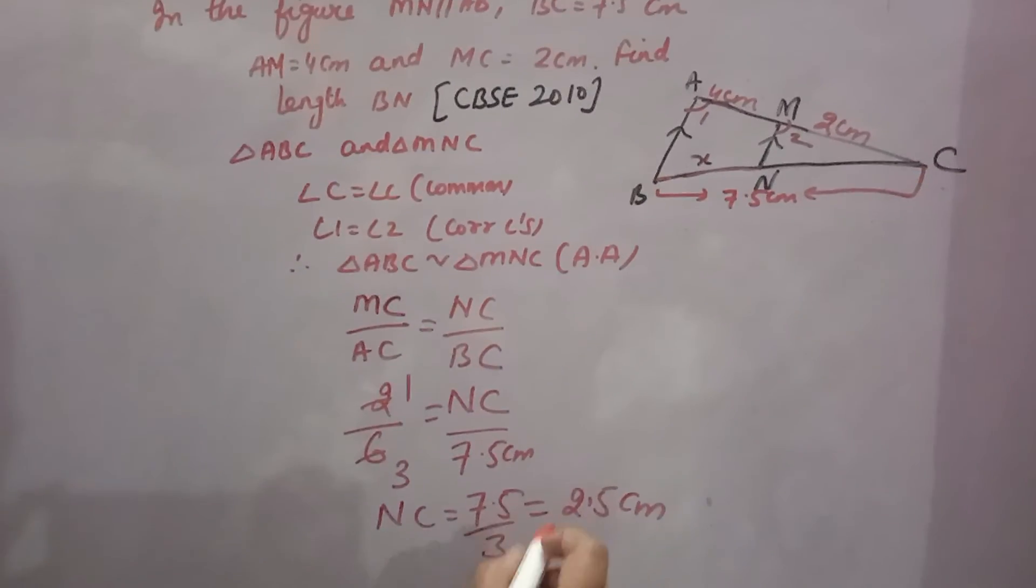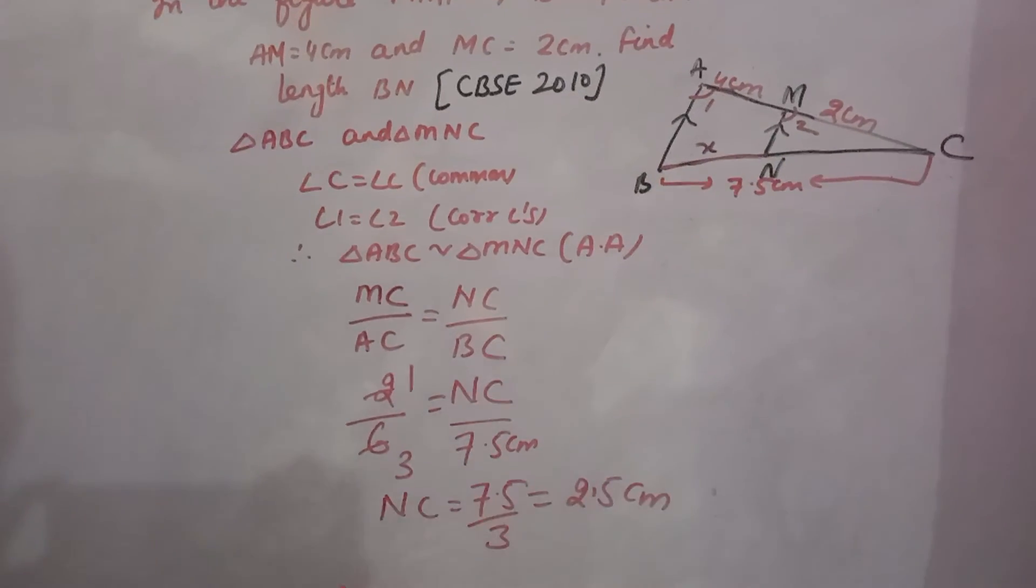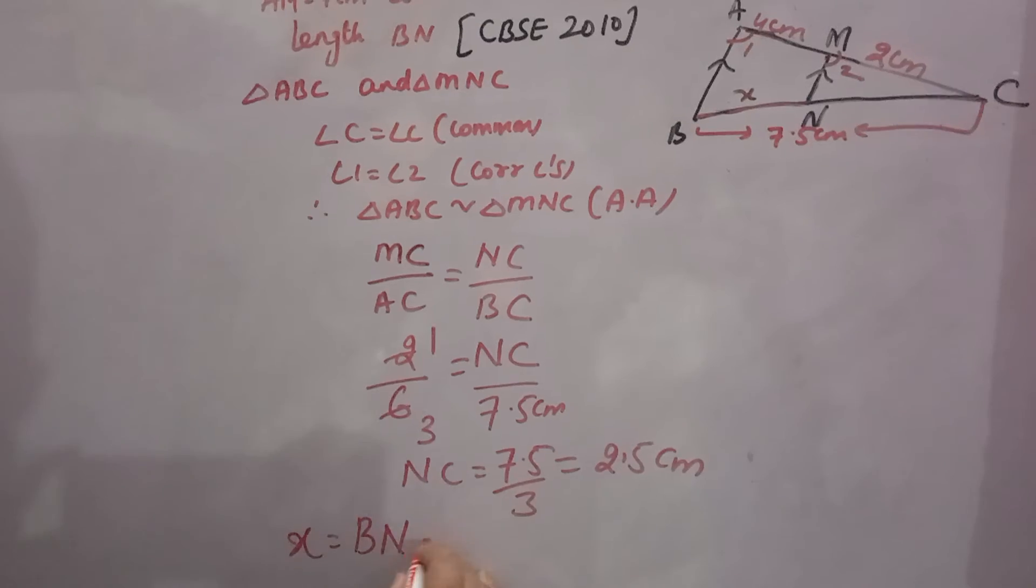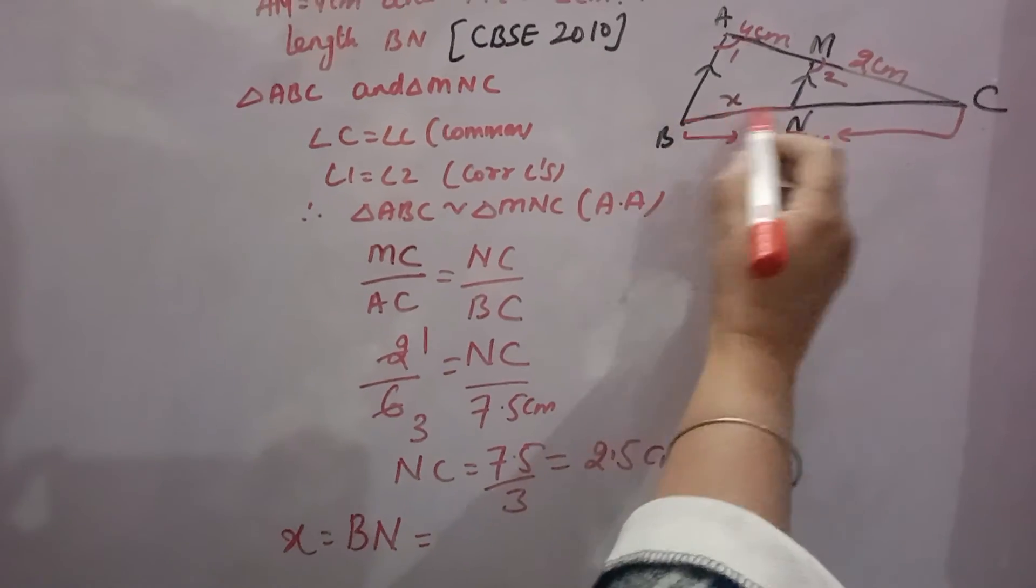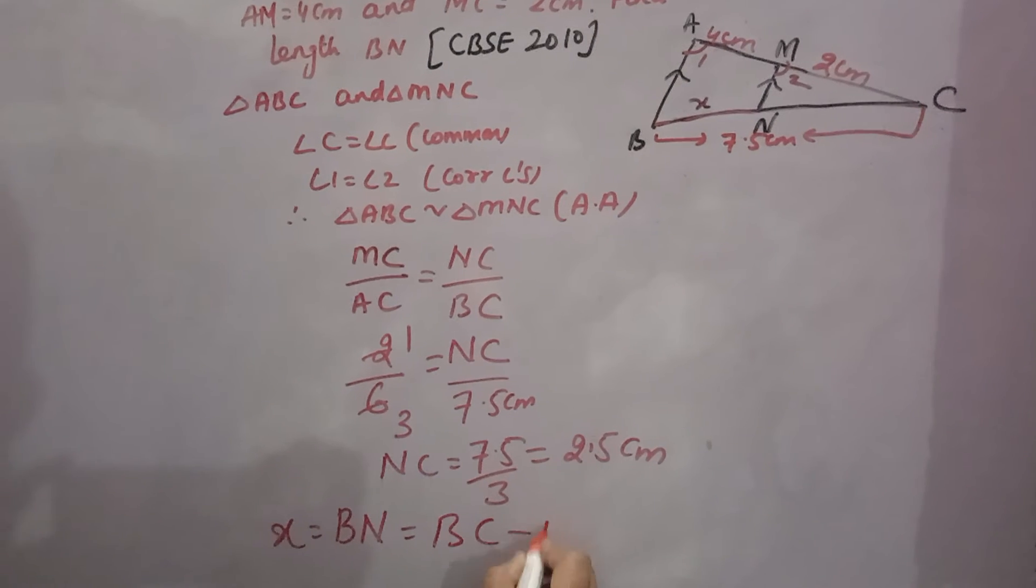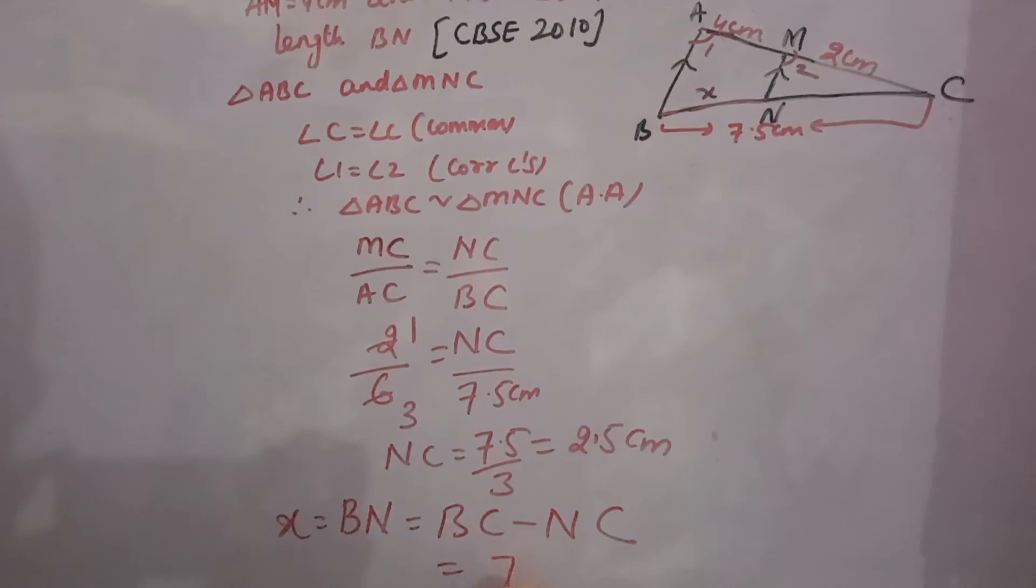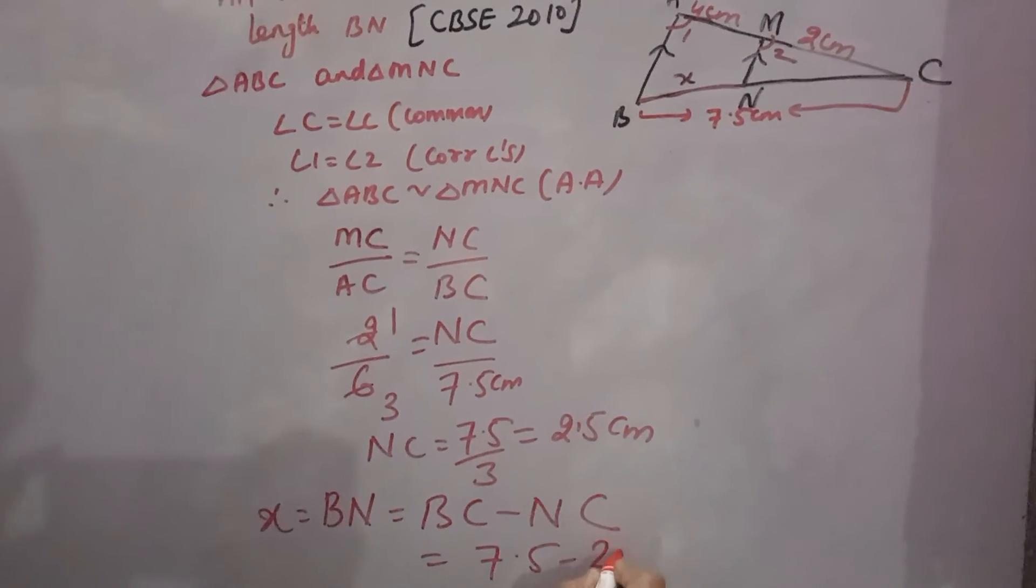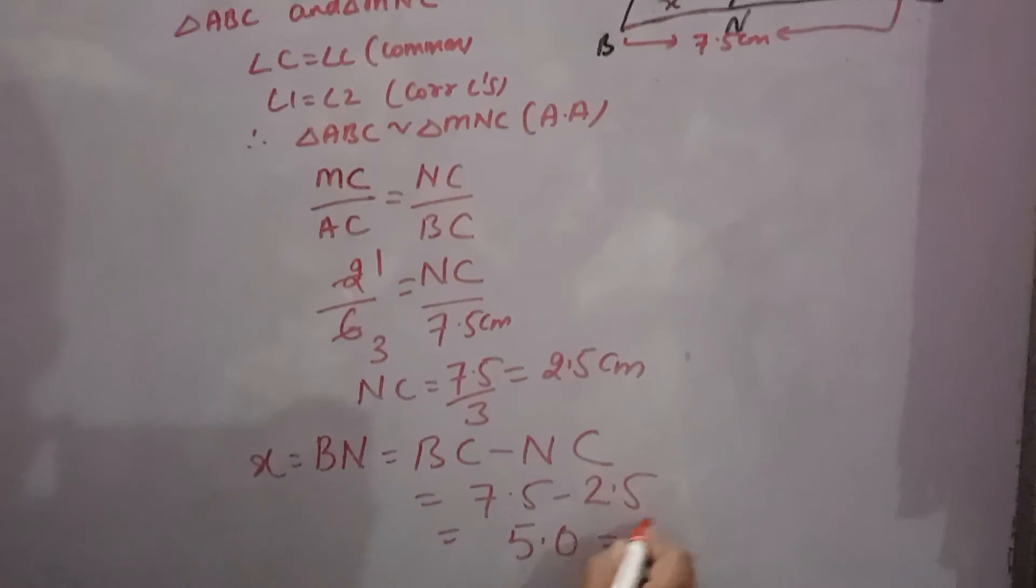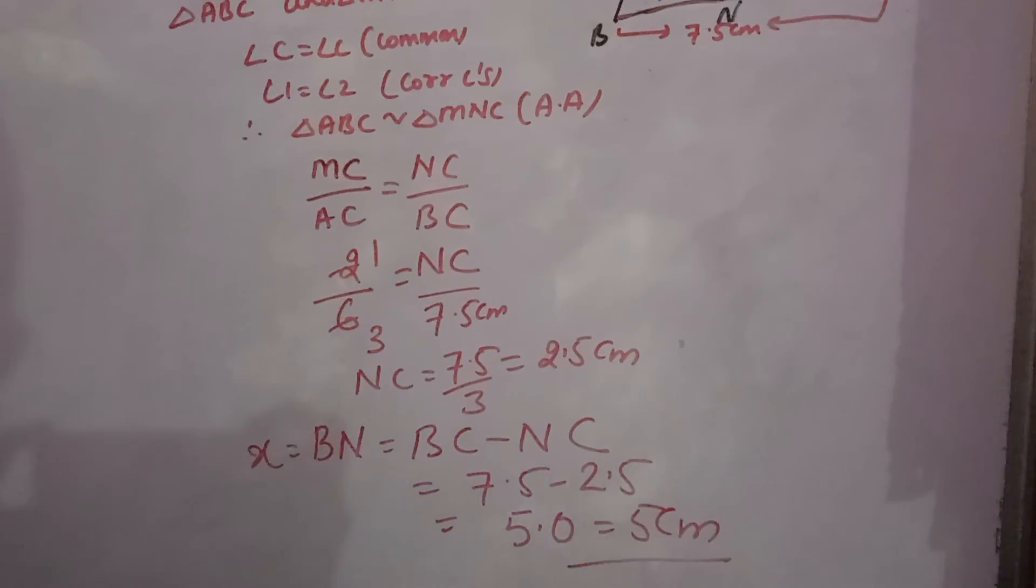NC is 2.5 cm, but you want to find BN. BN or X equals BC minus NC. BC is 7.5, NC is 2.5. So 7.5 minus 2.5 equals 5.0, that is 5 cm is the answer.